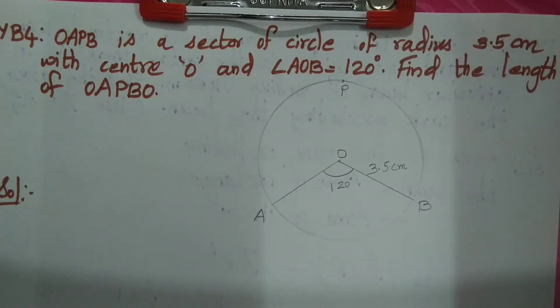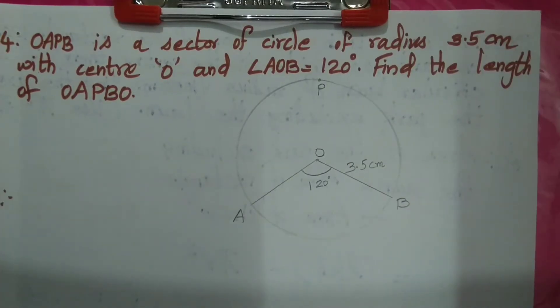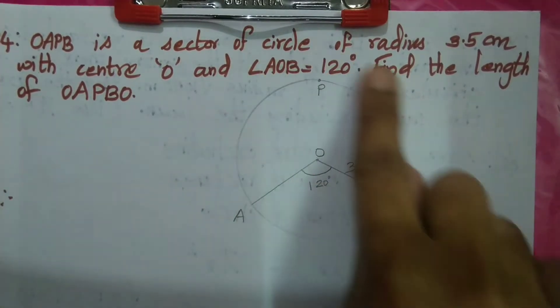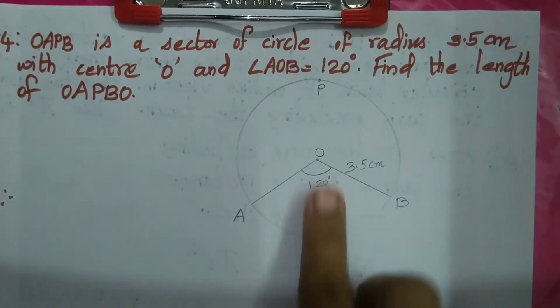Board question 4. OAPB is a sector of circle of radius 3.5 cm. Let's look at OAPB. OAPB is a sector. Actually, this is a major sector.